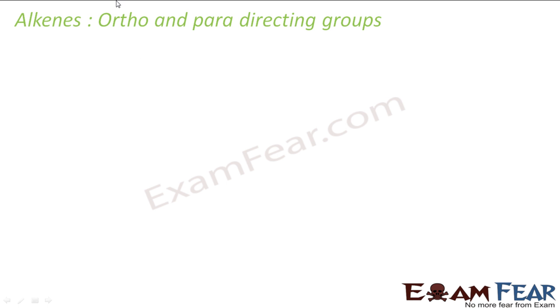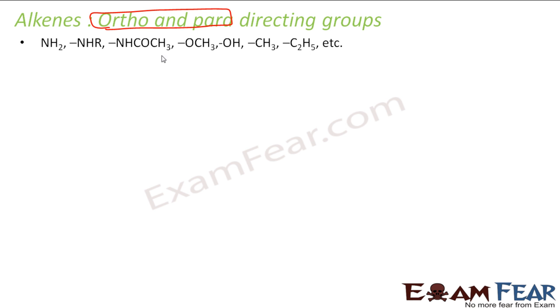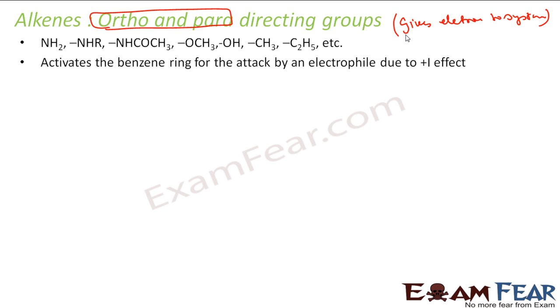Now let's study ortho and para directing groups. Why are ortho and para directing groups together? Because experimentally either you get ortho and para in higher quantity, or you get meta in higher quantity. So ortho and para directing groups are: NH2 (amine group), NHCOCH3, OH (alcohol group), CH3, C2H5 (ethyl group). These groups are generally ortho and para directing groups. We have seen that these groups generally give electrons to the system — they have a +I effect.